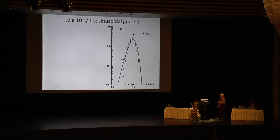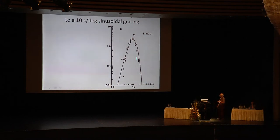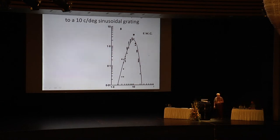This is the Blakemore-Campbell picture. On the horizontal axis is spatial frequency. They adapt to a 10-cycle-per-degree grating, then you measure the visibility of the test pattern — this is the threshold elevation. This is a very famous curve; you'll see it's steeper a little bit on the high side. The idea was that this curve is very similar to what you get when you do the same thing on neurons.